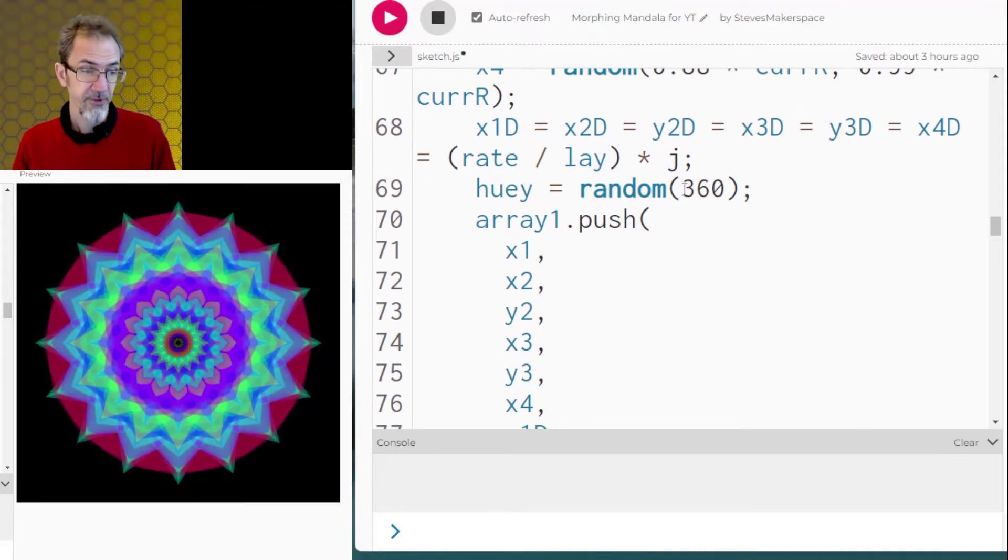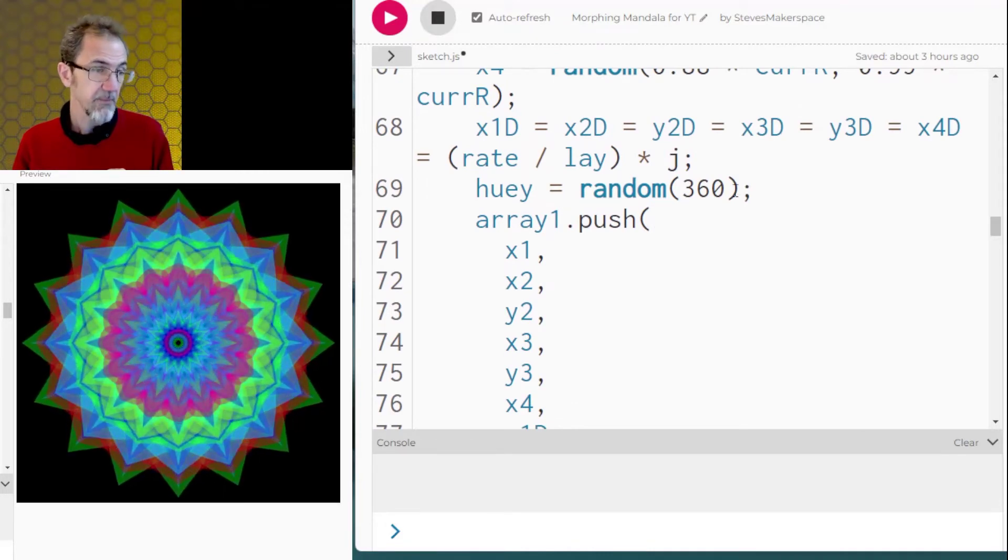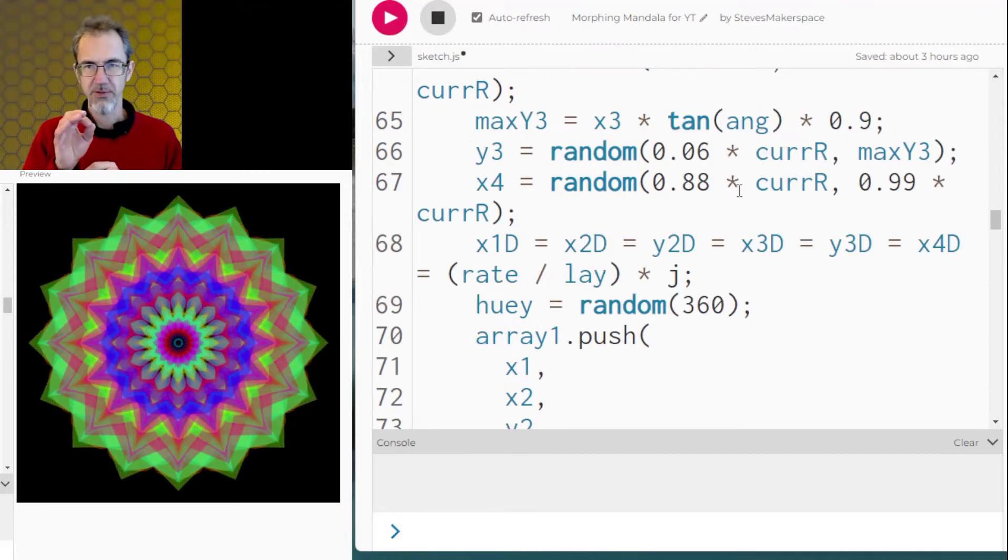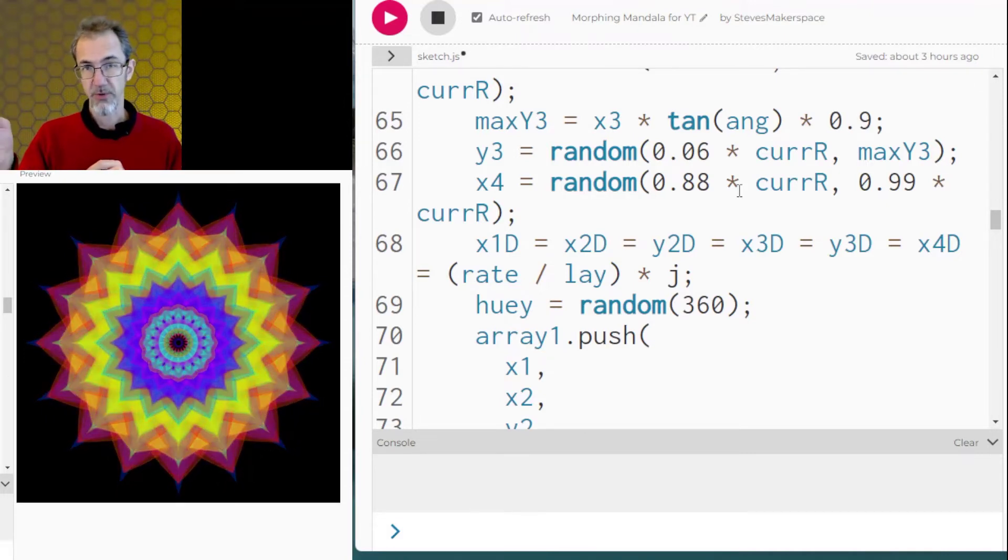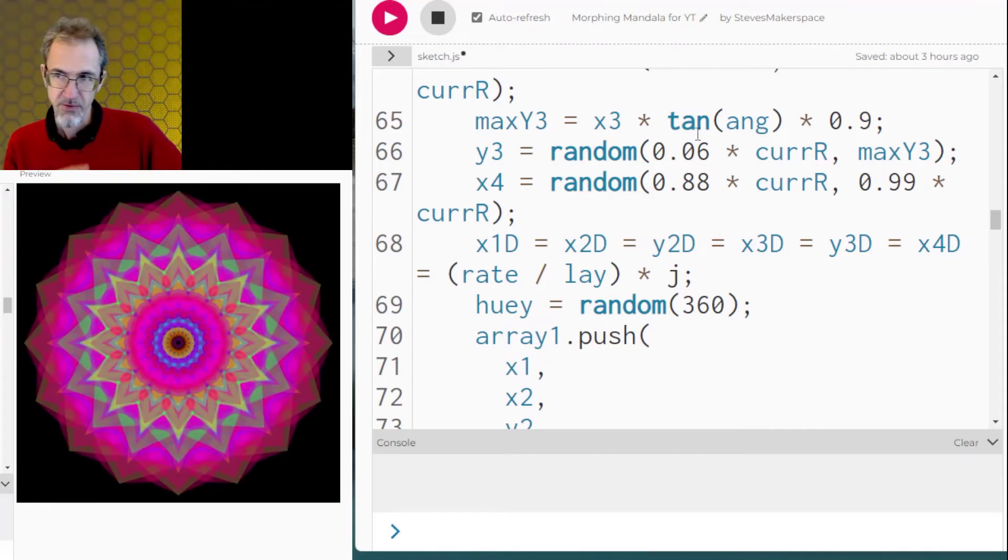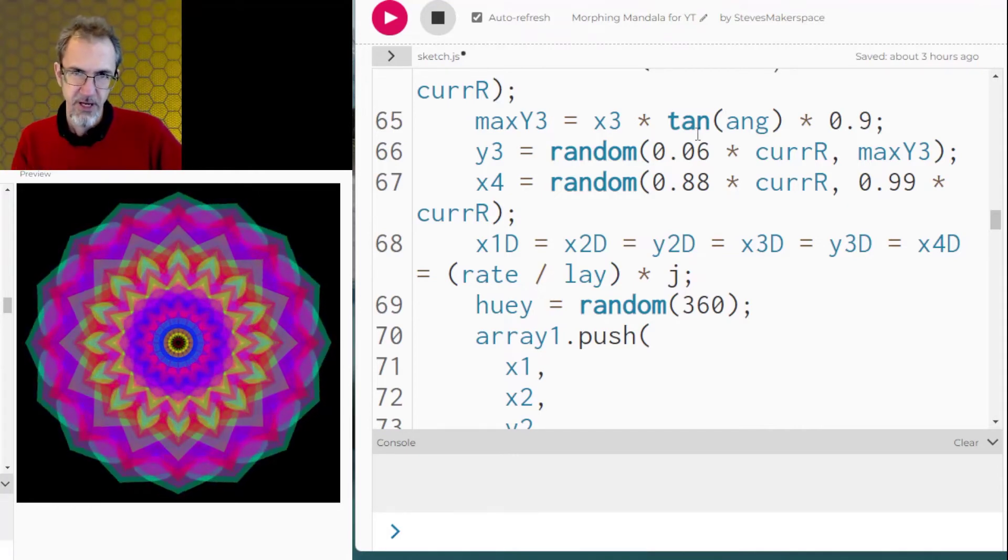It also is starting out with a hue for each layer that goes into the array. And then all the points in the petals also have a direction that they're moving. And they're all moving outward to start with or in a positive direction. So all of that gets saved into the array as well.